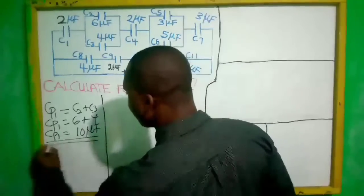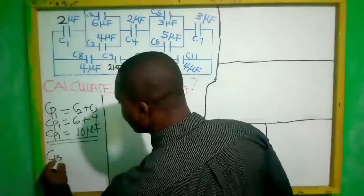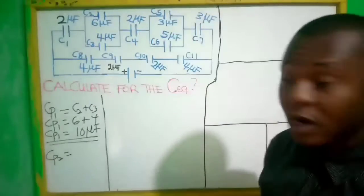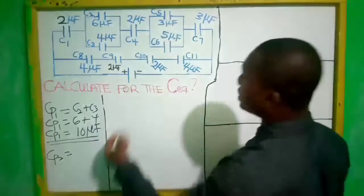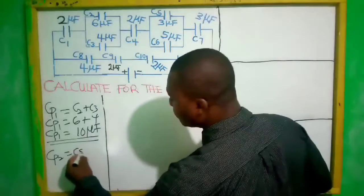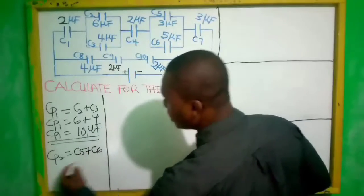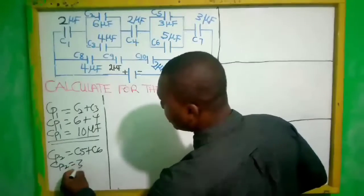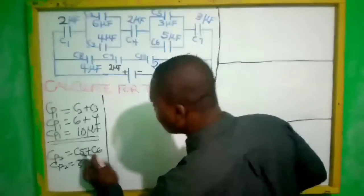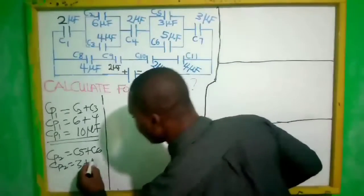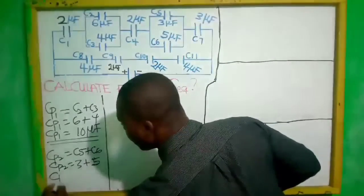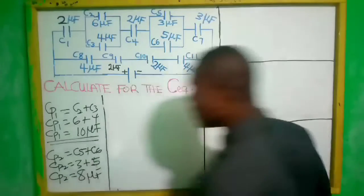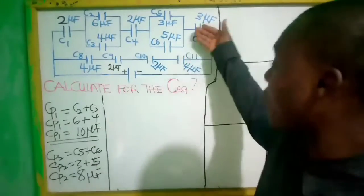Now for C_para2: C_para2 equals C5 plus C6, which is three plus five, giving us C_para2 equals 8 microfarads.